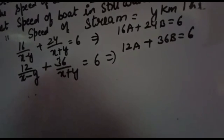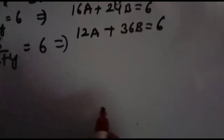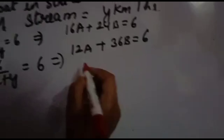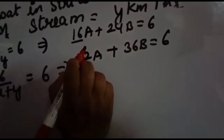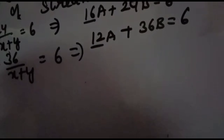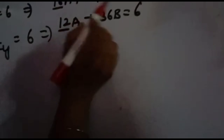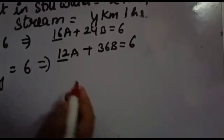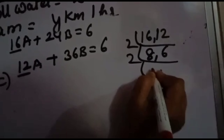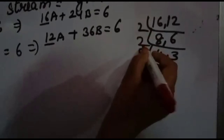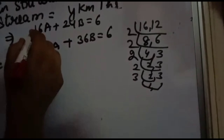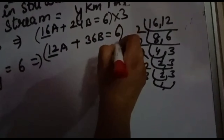Use the elimination method. The coefficients of a are 16 and 12. Find the LCM of 16 and 12, which is 48. So multiply equation 1 by 3 and equation 2 by 4. Equation 1 becomes: 48a plus 72b equals 18. Equation 2 becomes: 48a plus 144b equals 24.